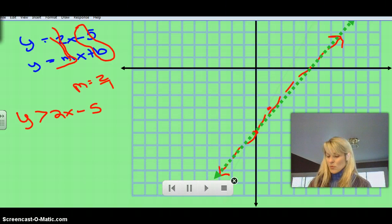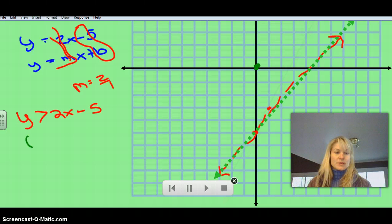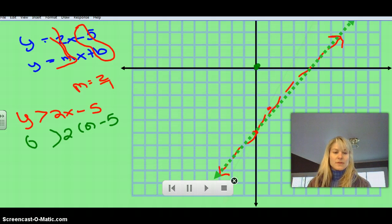And so then we're going to do our test point the same way. I'm going to pick (0, 0), and I'm going to plug it in here. So I'm going to put 0 in for y. It's greater than 2 times 0 minus 5. So again, we have 0 is greater than 2 times 0 is 0. So we have 0 minus 5, which makes it 0 is greater than negative 5.